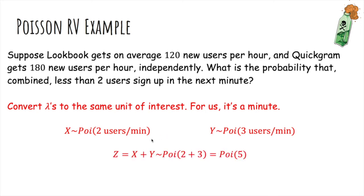Then their total actually is Poisson with parameter five, because if two users per minute sign up here and three users sign up per minute here, then on average, five units sign up to combine. And so the probability that Z is less than two is the probability that it's zero or one, and you can just plug into the Poisson PMF and get our answer.